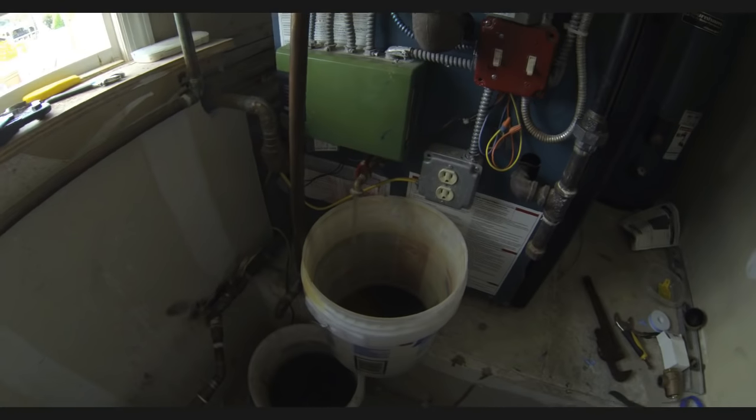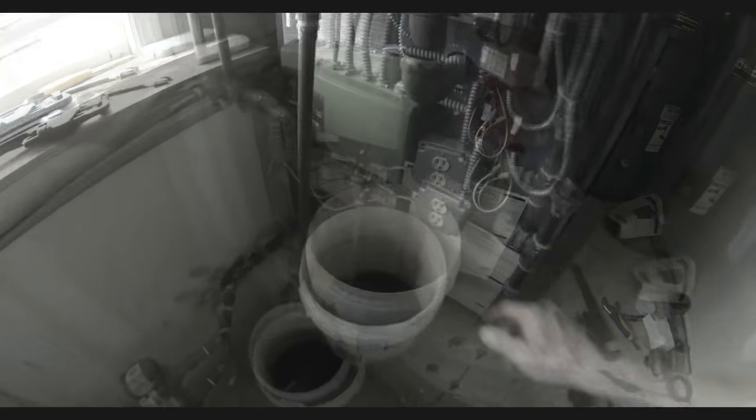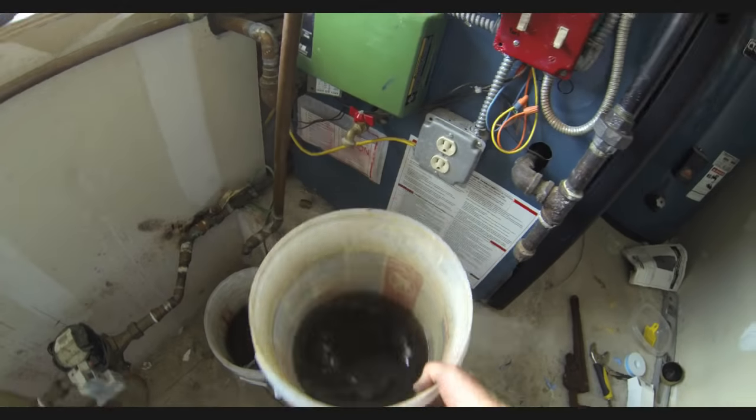Now I took out probably close to three or four gallons of water. I just wanted to let some run through the system to make sure there wasn't any air pockets. Then you can turn off that valve. And at this point you're ready to turn the burner back on.